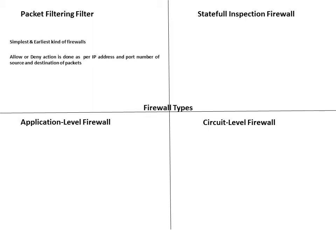Packet filtering firewall. They are the simplest and earliest kind of firewalls. They work on the principle that allow or deny action is done as per IP address and port number of the source and destination of packets.